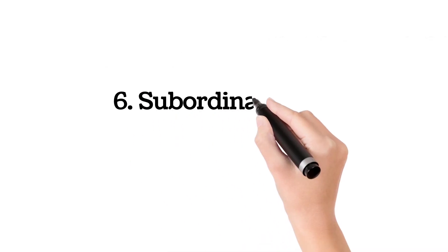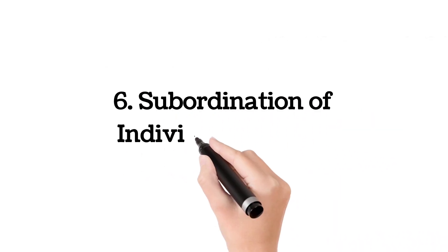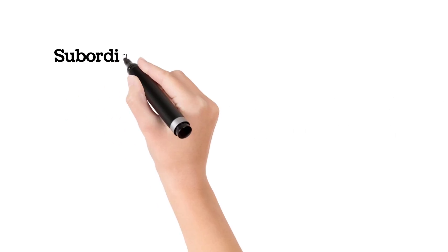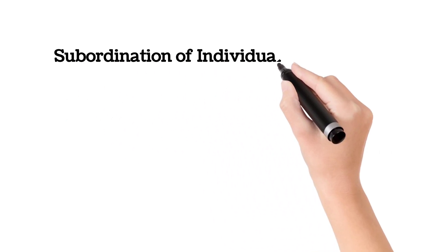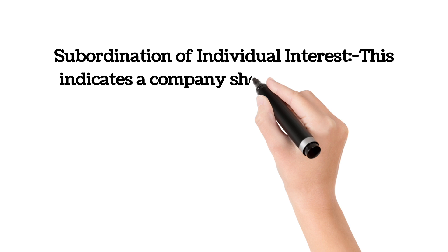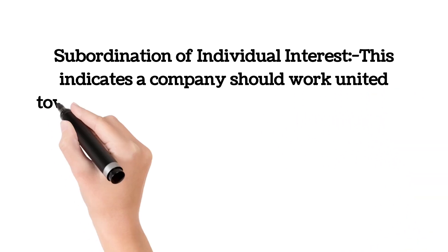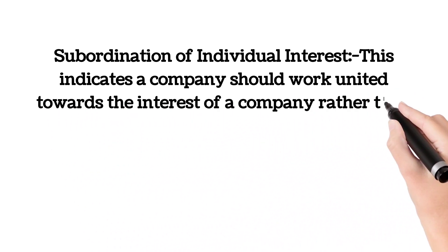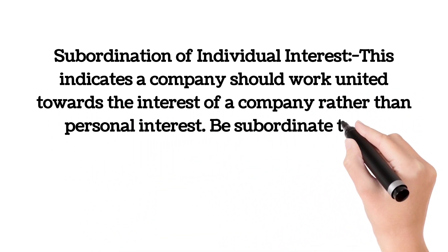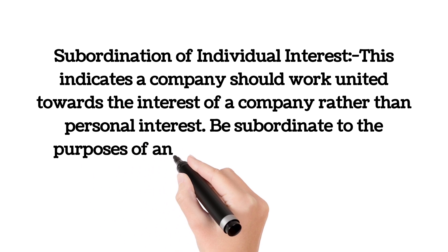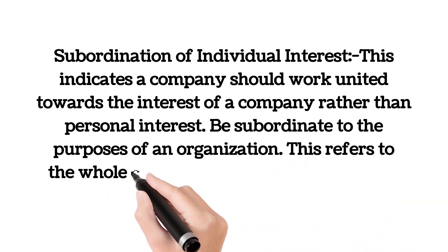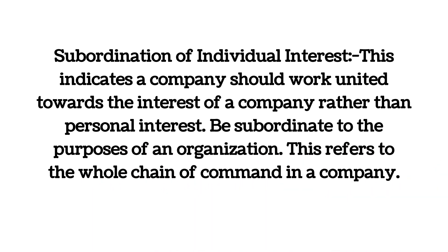Sixth is subordination of individual interest. This indicates a company should work united towards the interest of the company rather than personal interest. This subordinates individual purposes to the goals of an organization and refers to the whole chain of command in a company.